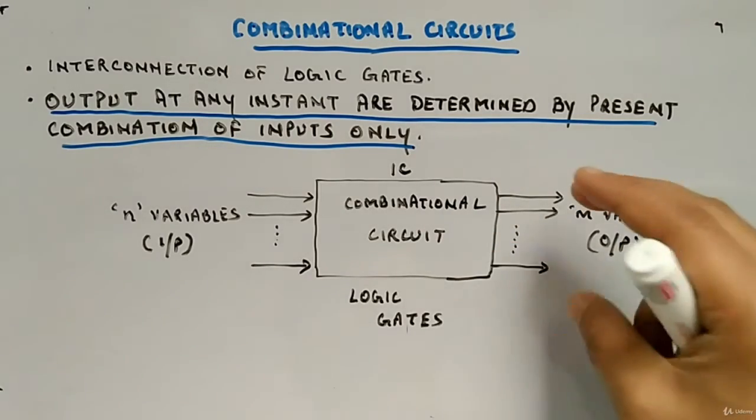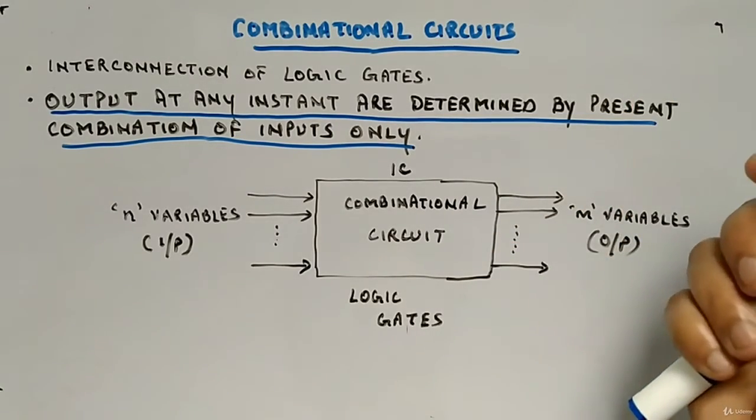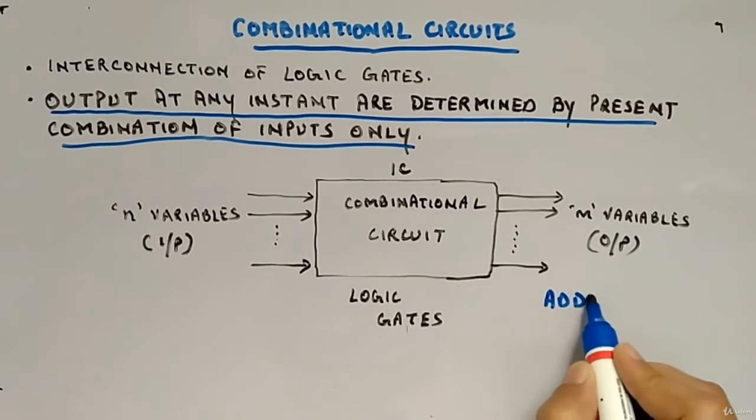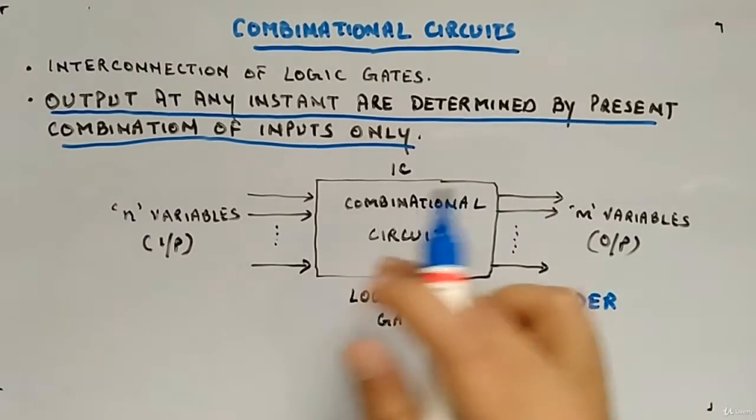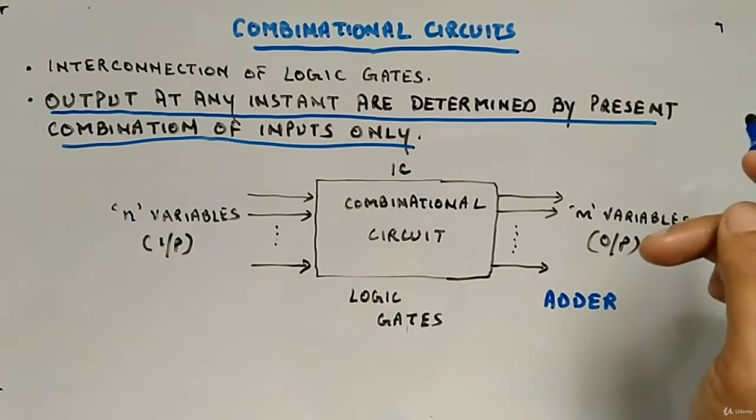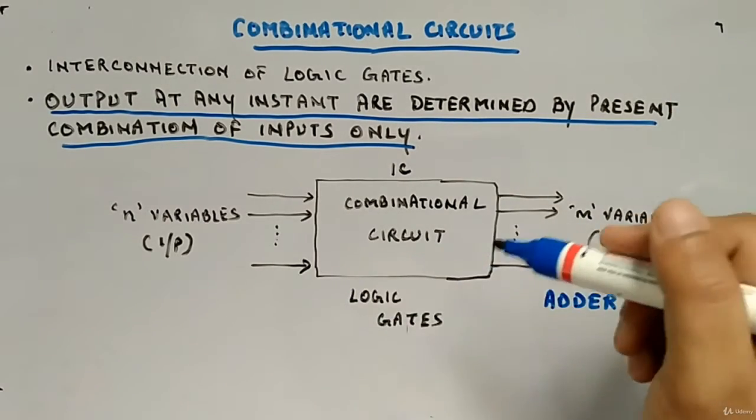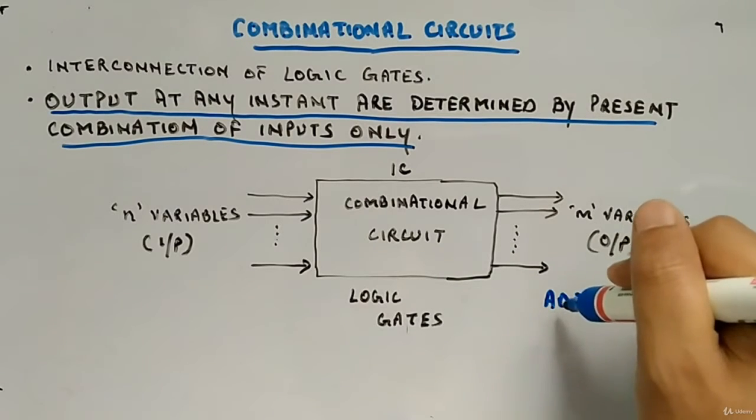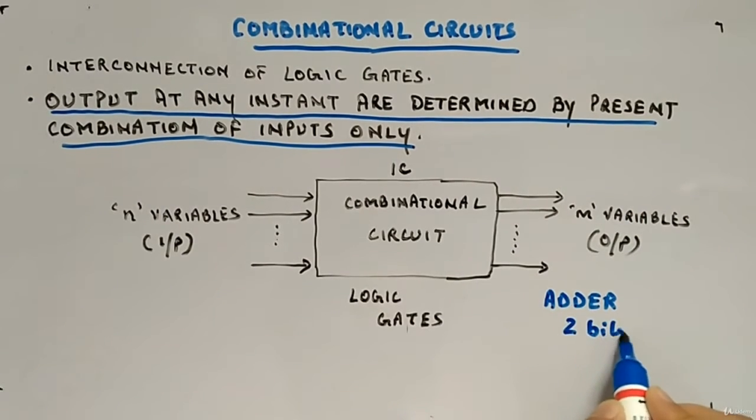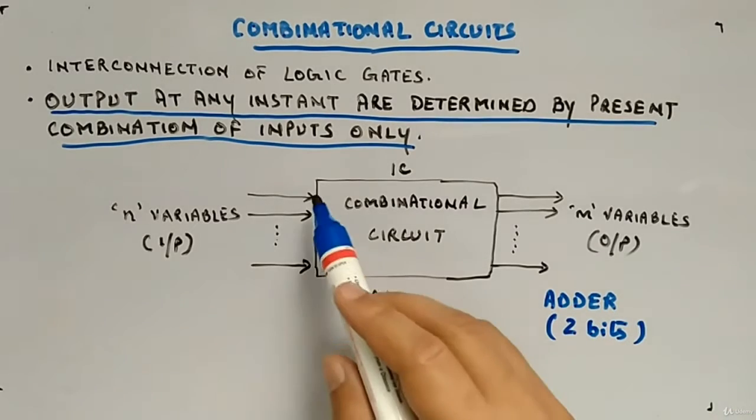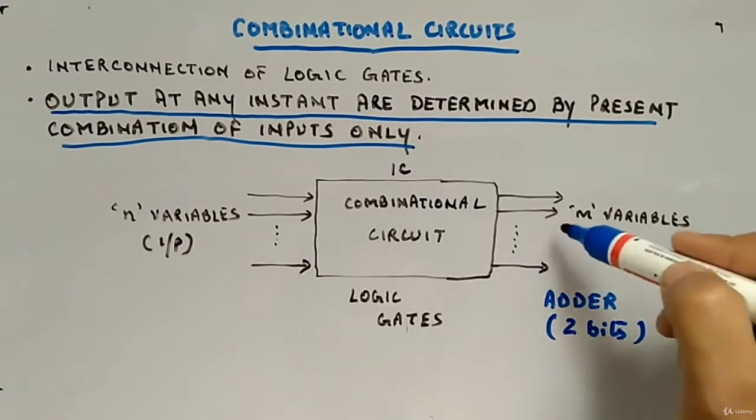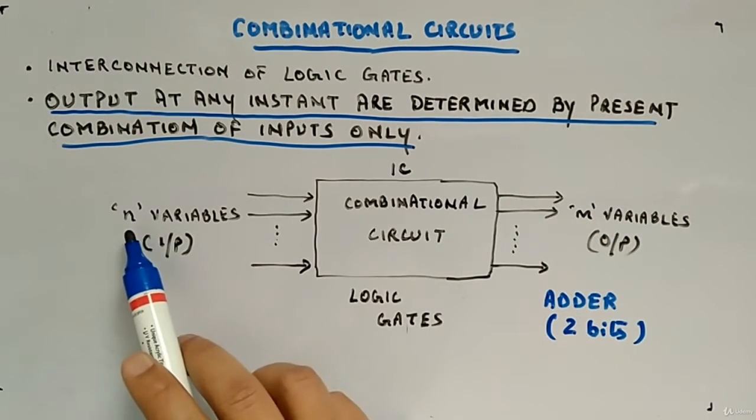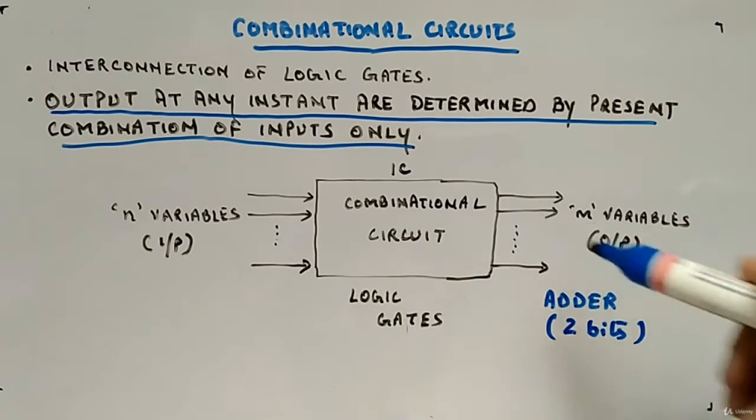So, why we are doing it? Because we want to perform some functionality. Let's say you want to make an adder. It will just add two bits and it will give output sum and carry. Two output, two inputs. We will see that example. But let's say you want to design an adder with two bits. Two bit input will give one sum and one carry. Output, two output will be there. So, N will be two and M will also be two.